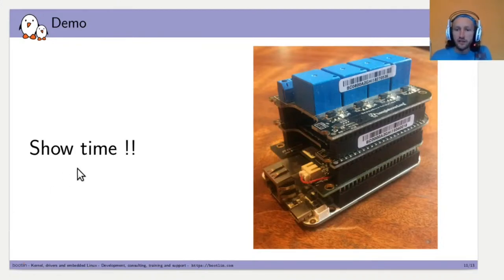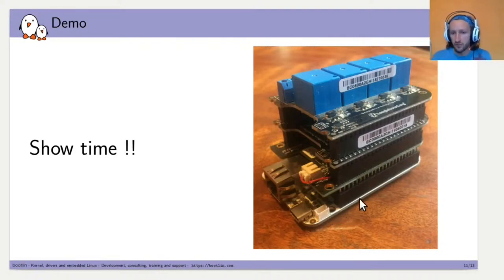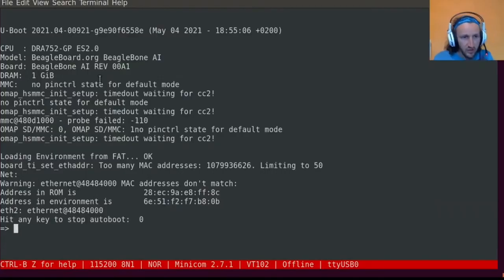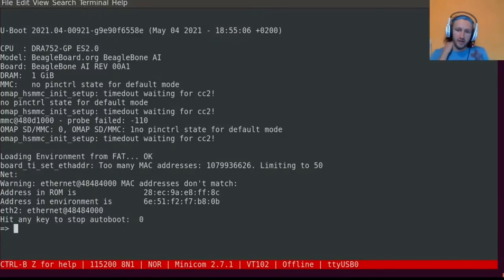It will be clearer with the demo — so it's showtime! I'll use the board shown in the photo: a BeagleBone AI baseboard with three capes — relay, fan, and another. I've booted the board and I'm switching to the serial console. You can see it's a BeagleBone AI and I've stopped it at the U-Boot prompt.